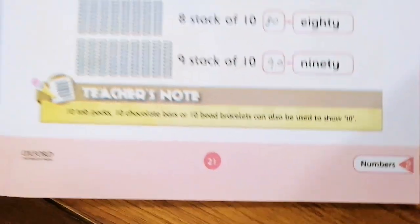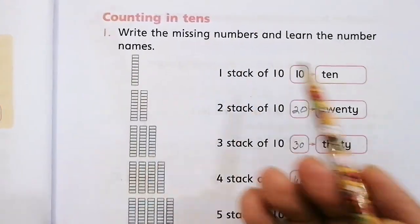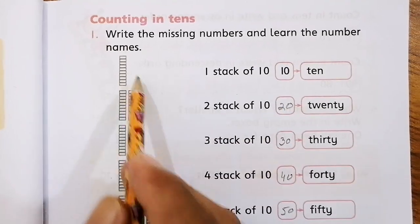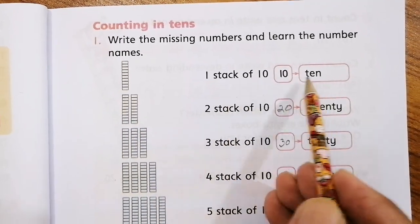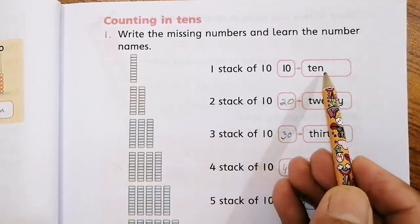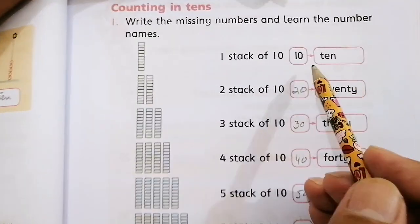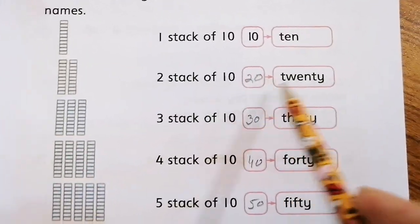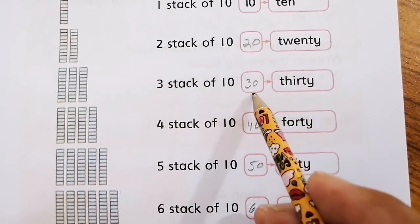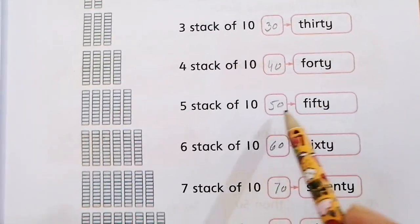Let's move to page number 21. Write the missing numbers and learn the number names. Here one stack of 10. This stack is tens place. One stack of 10 is ten. 2 stacks of 10 is twenty. 3 stacks of 10 is thirty. 4 stacks of 10 is forty.